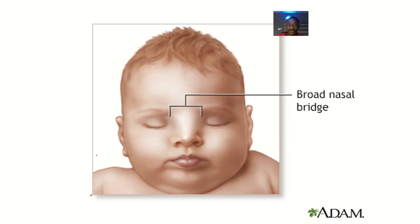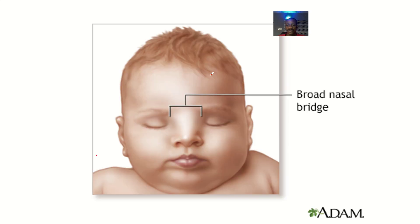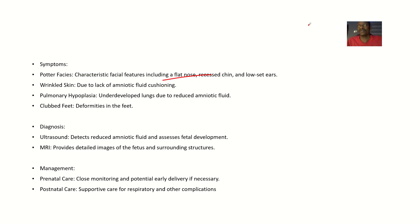Symptoms include the Potter facies — a flat nose, broad nasal bridge, and low-set ears. There is also wrinkled skin, which is due to the lack of amniotic fluid cushioning, since the amniotic fluid normally protects the embryo from compression. Additionally, there is pulmonary hypoplasia where the lungs are underdeveloped, and club feet.